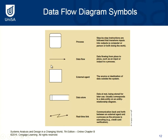There are some different symbols used in data flow diagrams. The first is a process, which represents essentially a use case. It's the step-by-step instructions that transform inputs into outputs — it's a computer or a person doing the work. It represents what process is being carried out in this particular system.